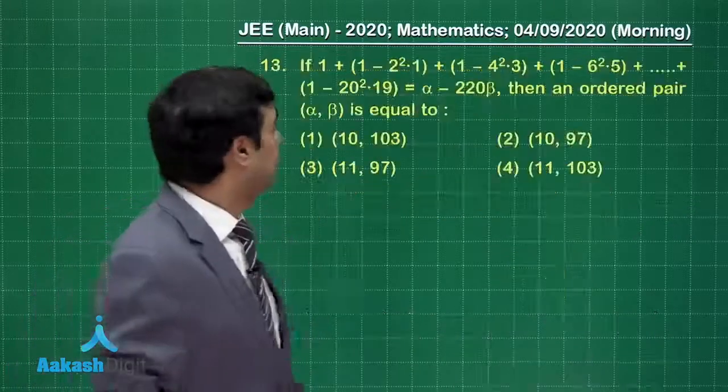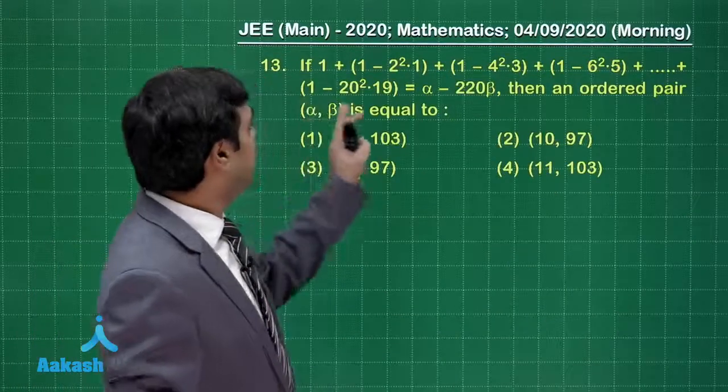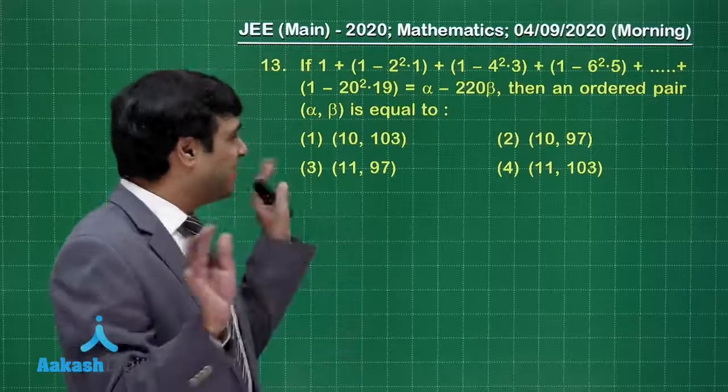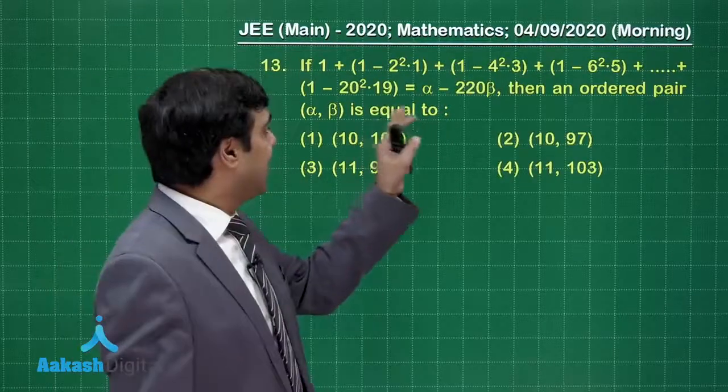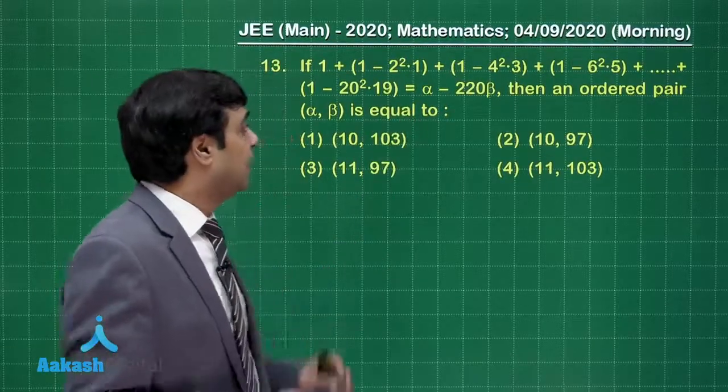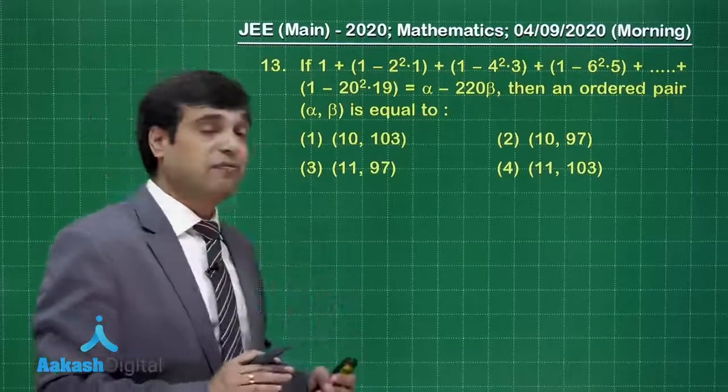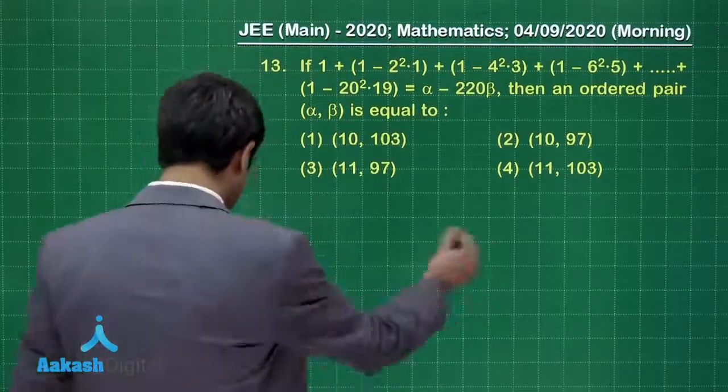I am sure this part is clear. Time to take up another question now. If 1 plus (1 minus 2²)(1 minus 4²) and so on, one series is given equals alpha minus 220 beta, then an ordered pair (alpha, beta) is equal to. Let's try out.